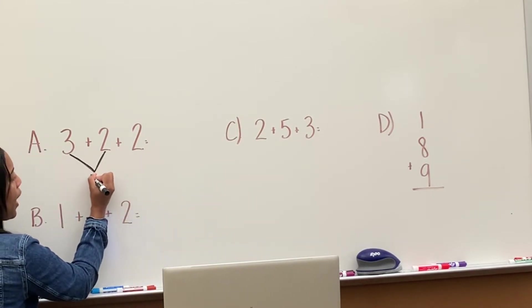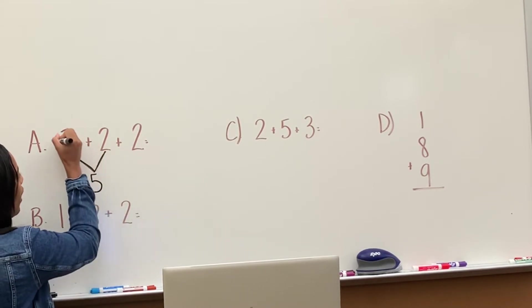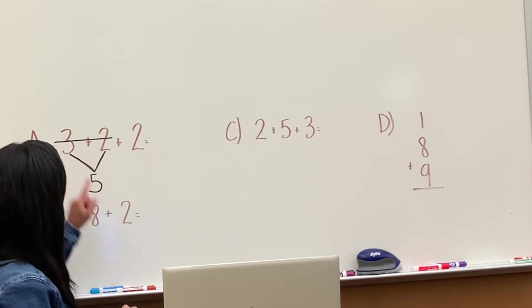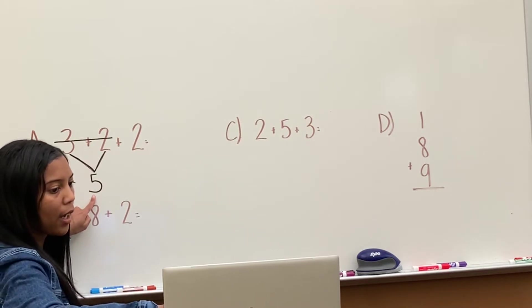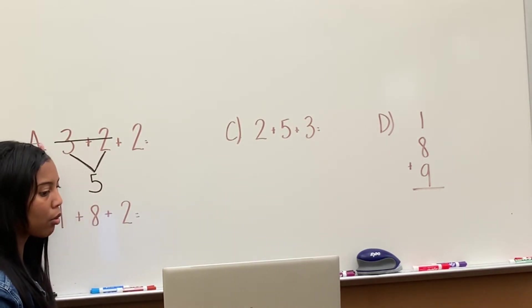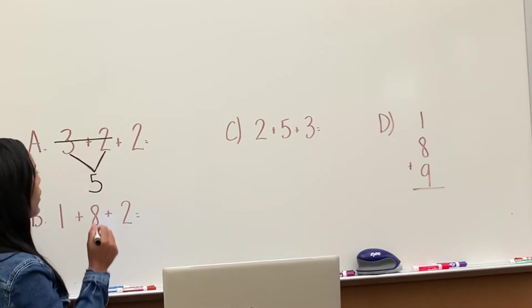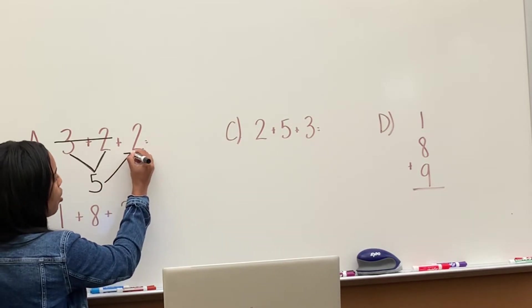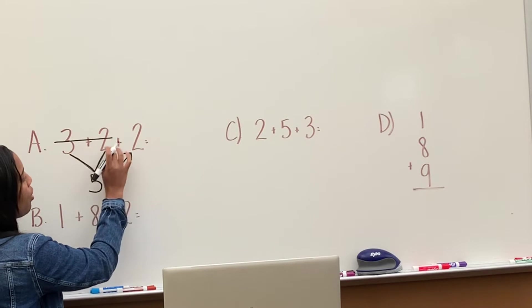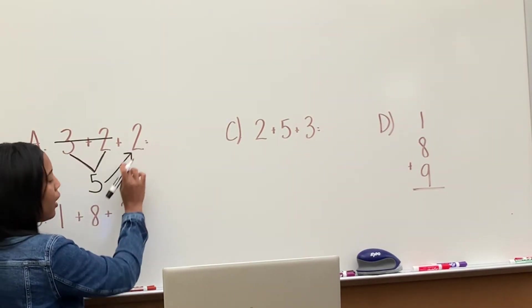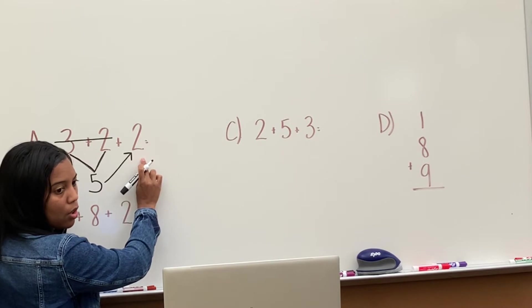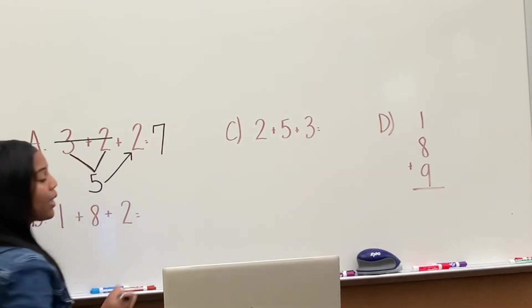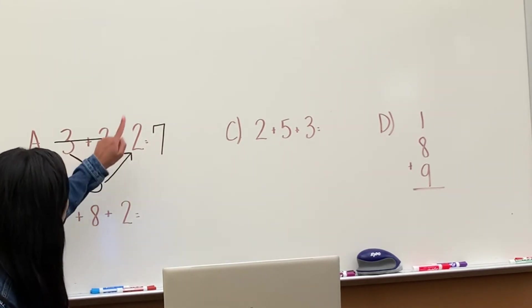Then I put 5 down here because 3 plus 2 equals 5. I cross out 3 plus 2 because I already added those 2 numbers. So the only number I have left is 2. This is going to be 5 plus 2. 5 plus 2, what does that equal to? 7. So my answer is 7. 3 plus 2 plus 2 equals 7.